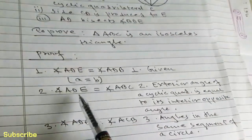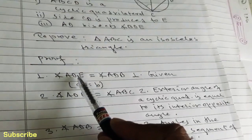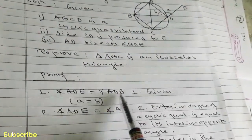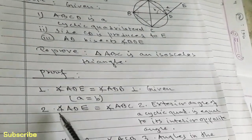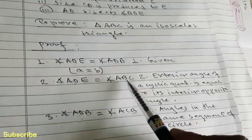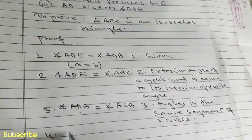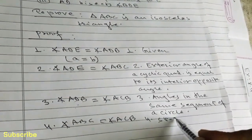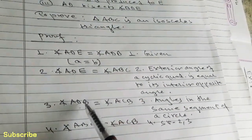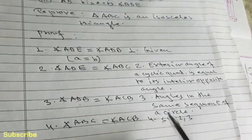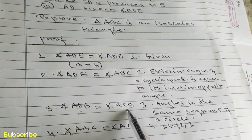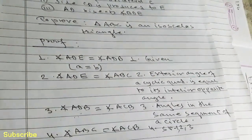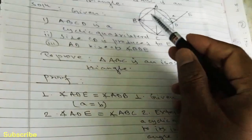Now we can combine statements 1, 2, and 3. In statement 1, angle ADE and angle ADB are already equal. Since the left-hand sides are equal, we can equate the right-hand sides as well. So combining statements 1, 2, and 3, we get angle ABC is equal to angle ACB.